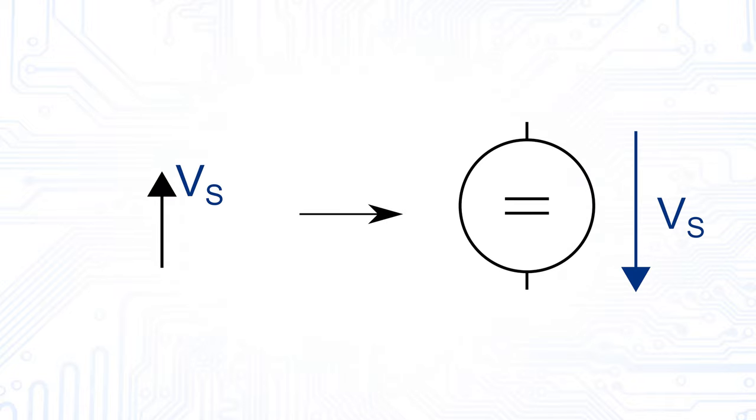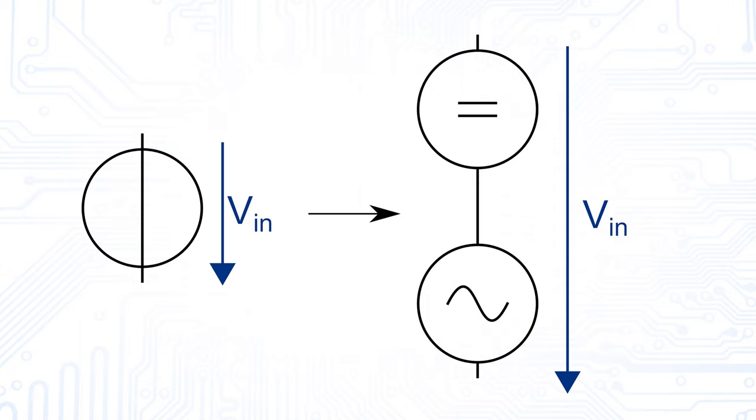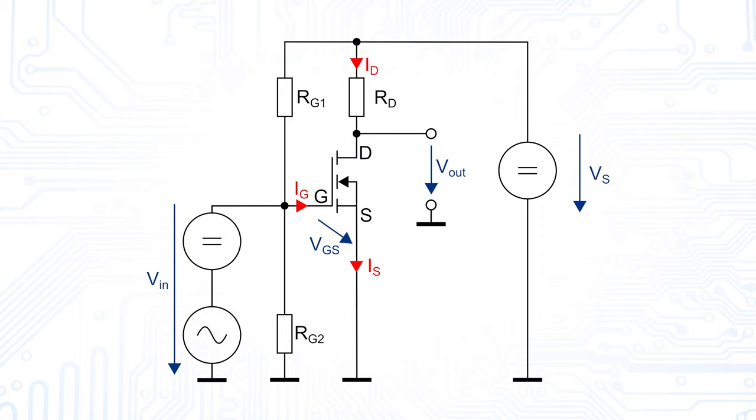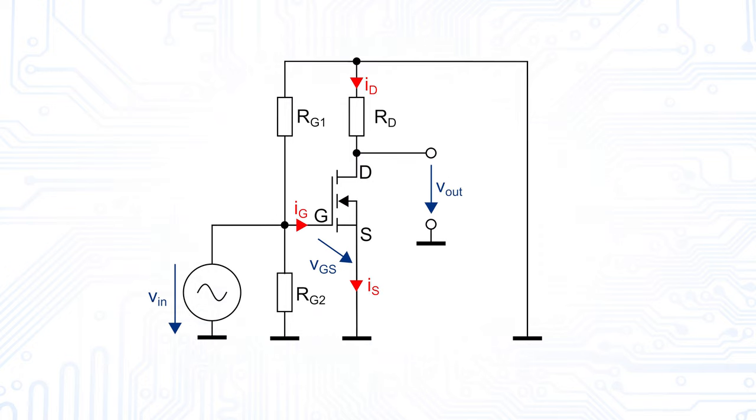In our circuit we only have two constant voltage sources, the supply voltage and the DC part of the input voltage VIN. We replace these voltage sources by a short. The AC part of the input voltage, which is the small signal we want to amplify, remains.